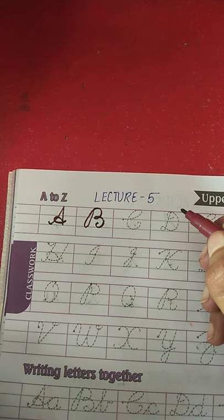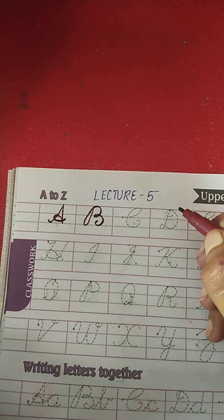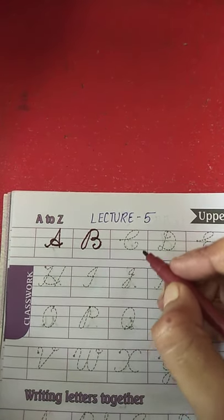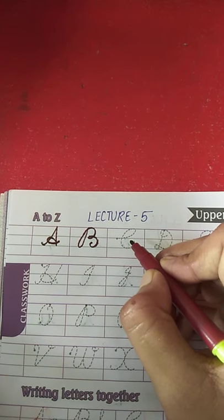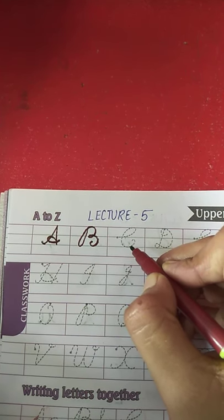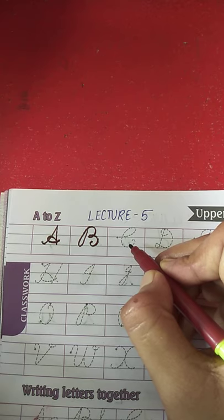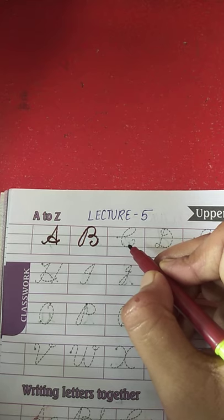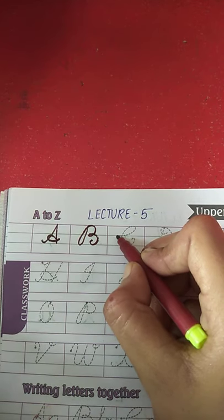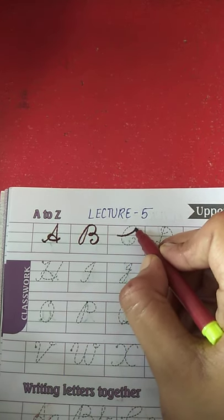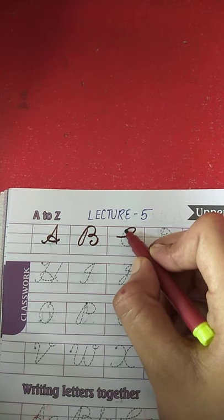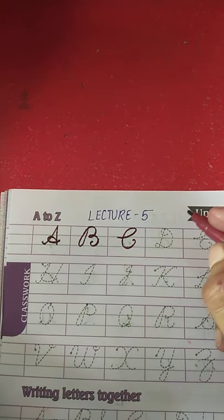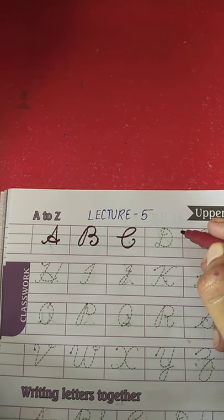B for ball ke baad kaunsa letter aata hai? Letter C — C for cat. What is the spelling of cat? C-A-T. Cat. Now put your pencil on the dot and draw a curve and a semicircle and stop here. This is letter C — C for cat.